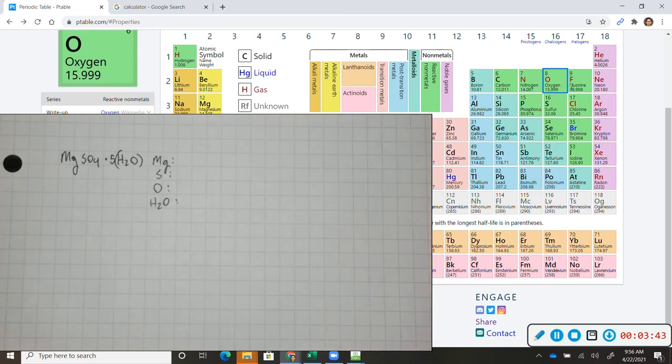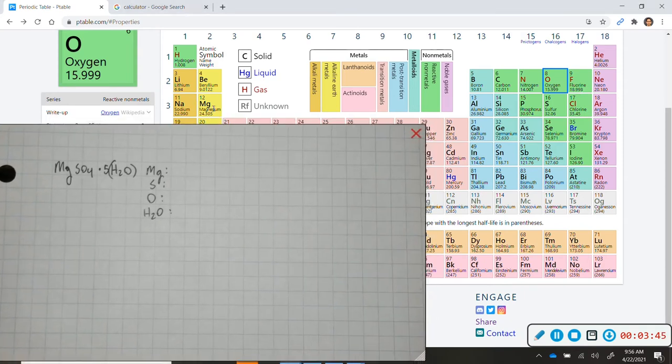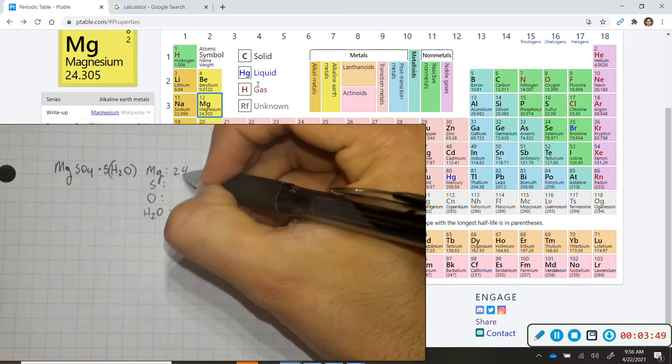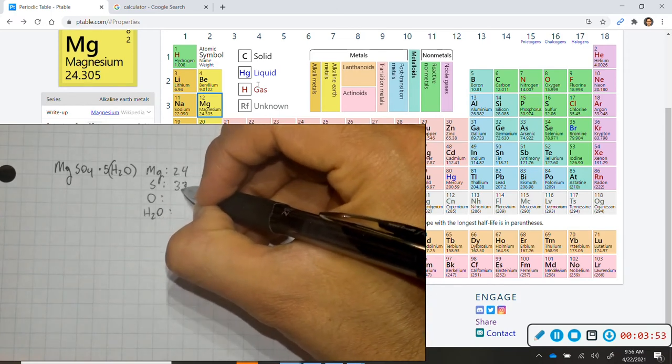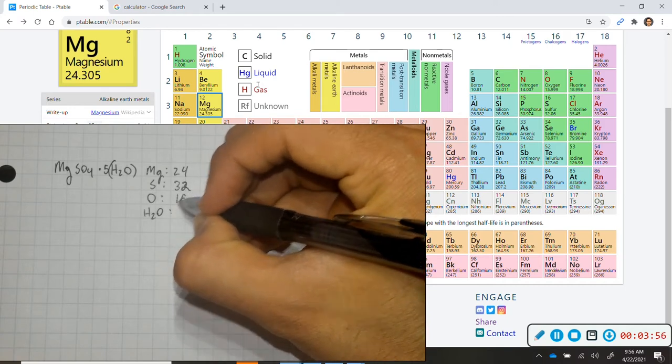So Mg, if we look in the periodic table, is right here, and it has a mass that rounds to 24. Sulfur, if we recall from before, has a mass of 32. Oxygen still has a mass of 16.